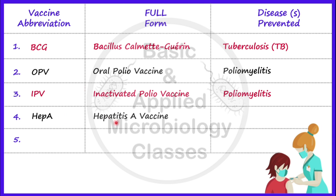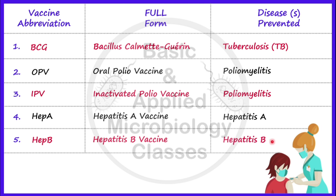Now let's talk about HepA. The full form of HepA is Hepatitis A vaccine, used against Hepatitis A disease. Next is HepB, which stands for Hepatitis B vaccine, used against Hepatitis B disease. Both Hepatitis A and Hepatitis B are caused by hepatitis viruses — specifically Hepatitis A virus and Hepatitis B virus respectively. The route of administration for both vaccines is intramuscular.